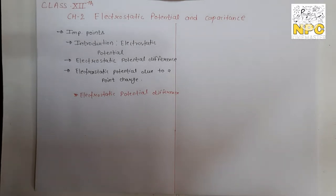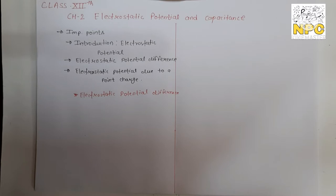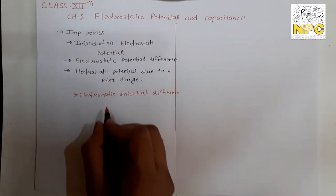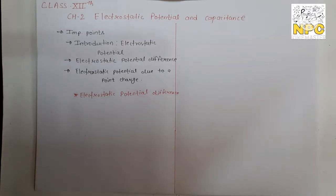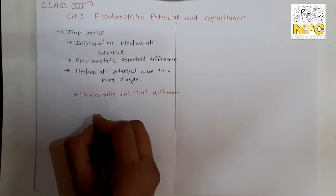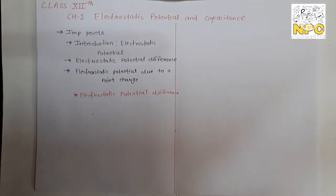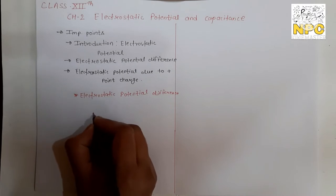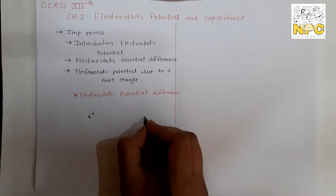Generally in physics, potential is not directly defined — potential difference is defined. This means if you consider two points A and B, you find the potential difference between those two points.